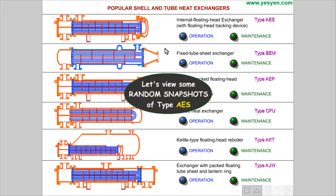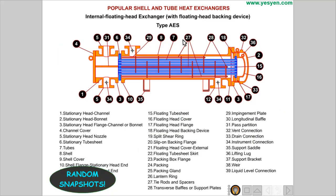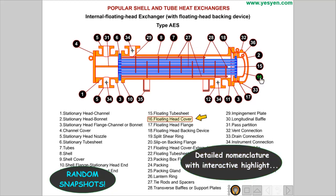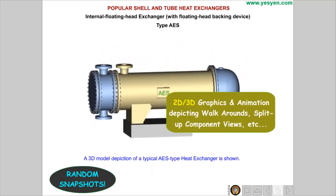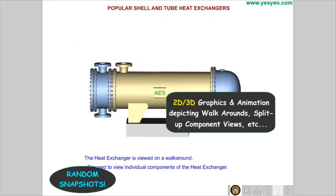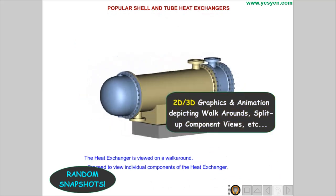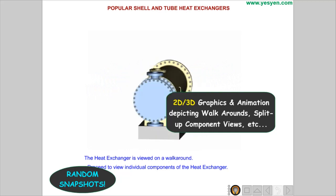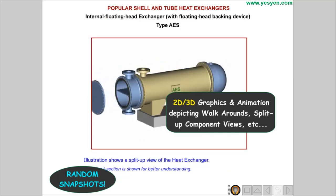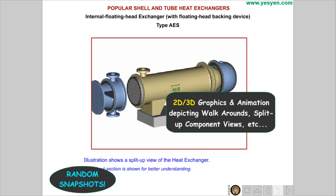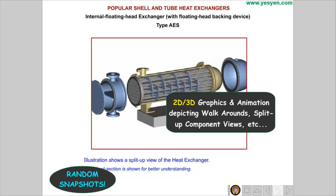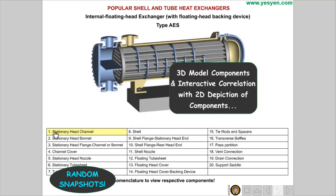Viewing random snapshots of type AES, the course features detailed nomenclature with interactive highlight, 2D and 3D graphics and animation depicting walk-arounds, split-up component views, 3D model components, and interactive correlation with 2D depiction of components.